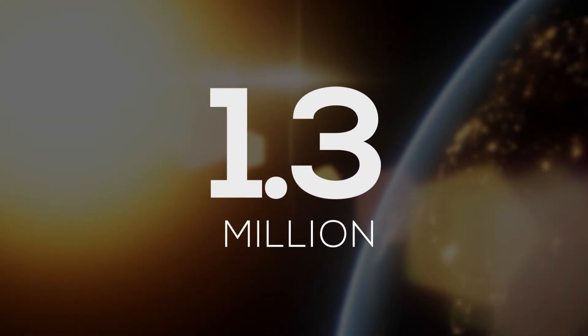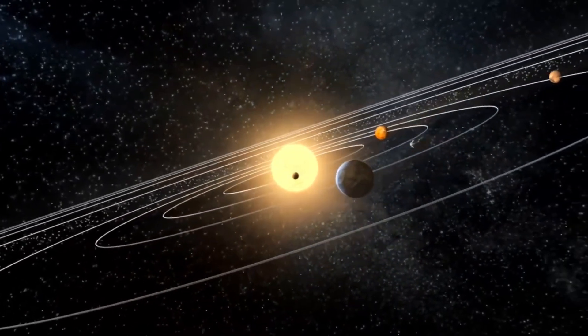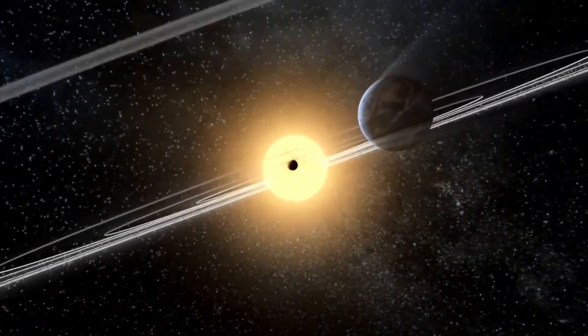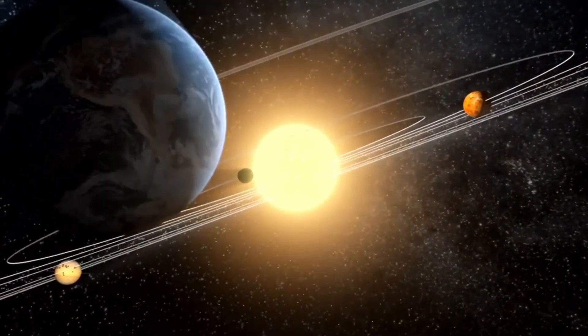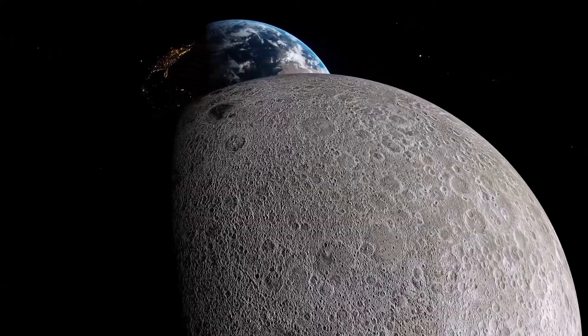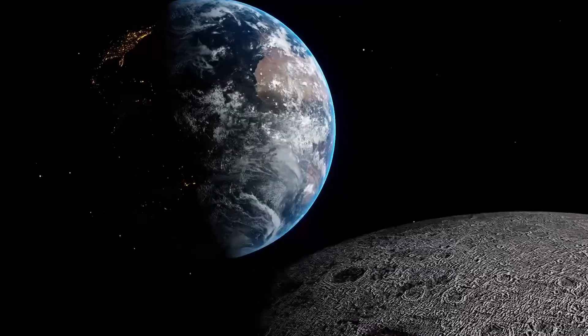Our Sun, which is around 1.3 million times bigger than our Earth, has a very strong gravity, and it attracts every other celestial body in our solar system towards it. Similarly, our Earth attracts the Moon towards it.